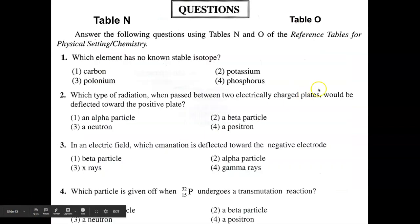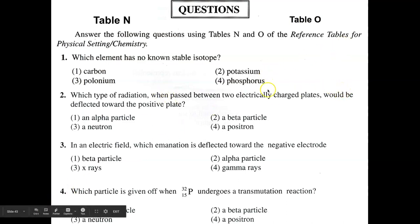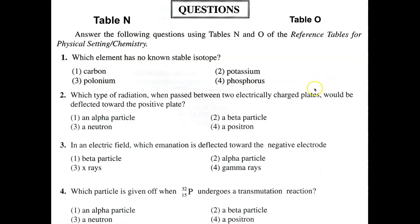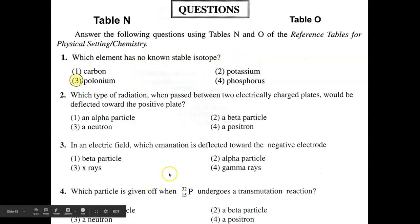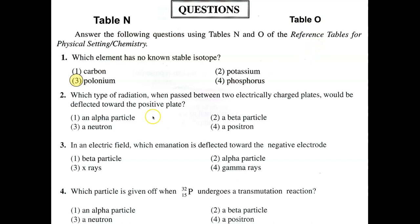So here we have some practice questions you can do on your own and open up. I want you to practice all these questions. For example: which element has no known stable isotope? We're talking about elements beyond atomic number 83. If you have problems writing a nuclear equation, there's a video linked here to help you. Hope this helped.